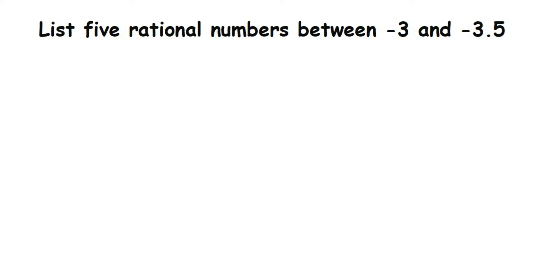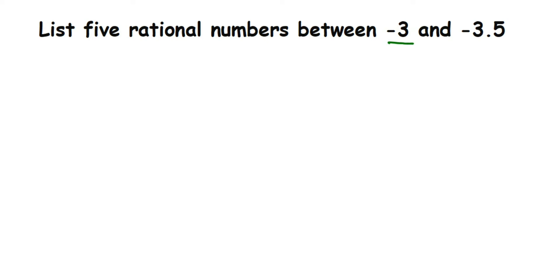Here is a question on rational numbers: list five rational numbers between minus 3 and minus 3.5. What we're going to do here is convert them into rational numbers.